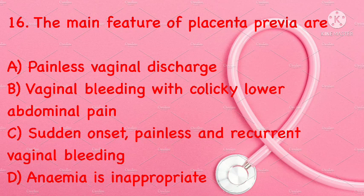The main features of placenta previa are: painless vaginal discharge, vaginal bleeding with colicky lower abdominal pain, sudden onset, or painless and recurrent vaginal bleeding. Correct answer is D: sudden onset, painless and recurrent vaginal bleeding.